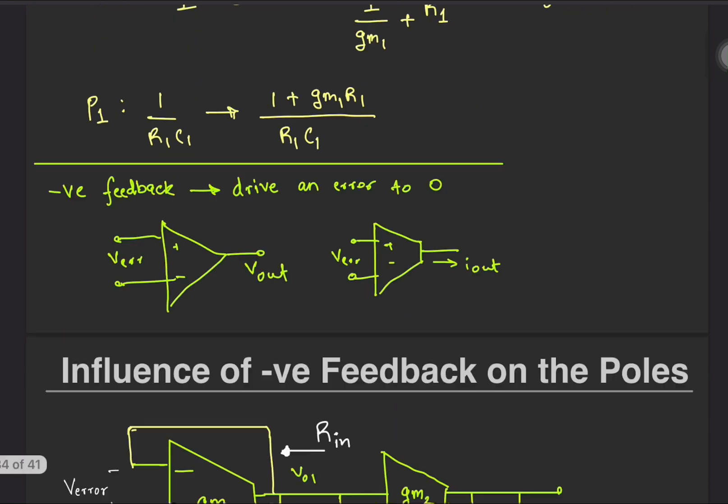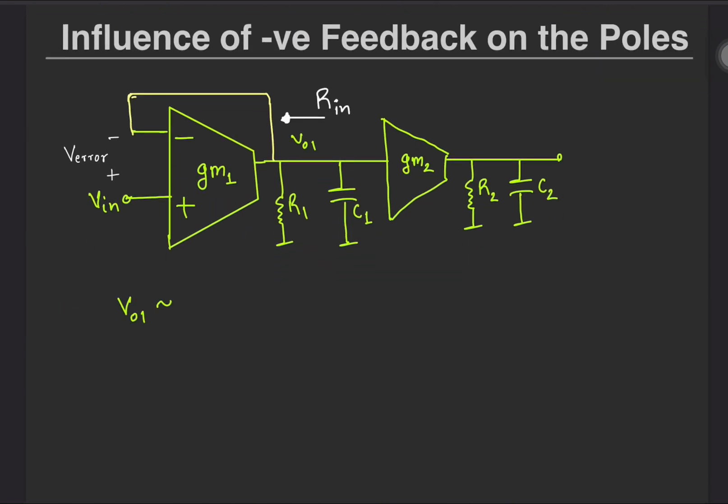In the above example, GM1 seeks to drive the error between VO1 and VIN to zero, meaning that it attempts to fix VO1 to VIN. As you may know that fixing the voltage is called reducing the resistance at the anode in R language.